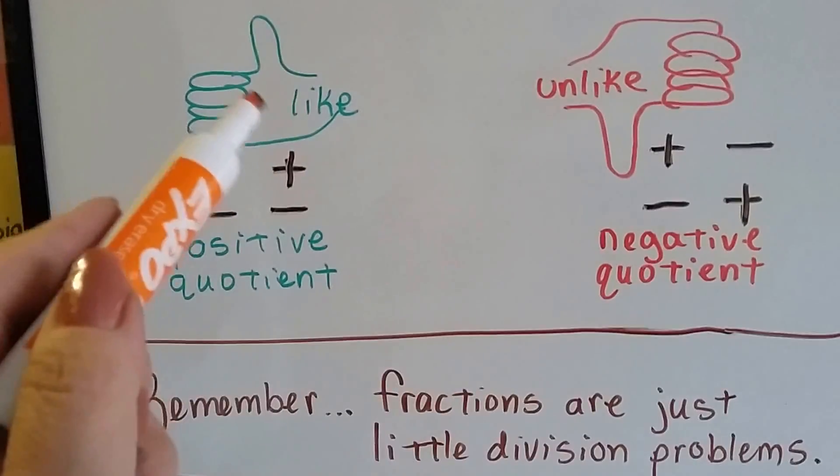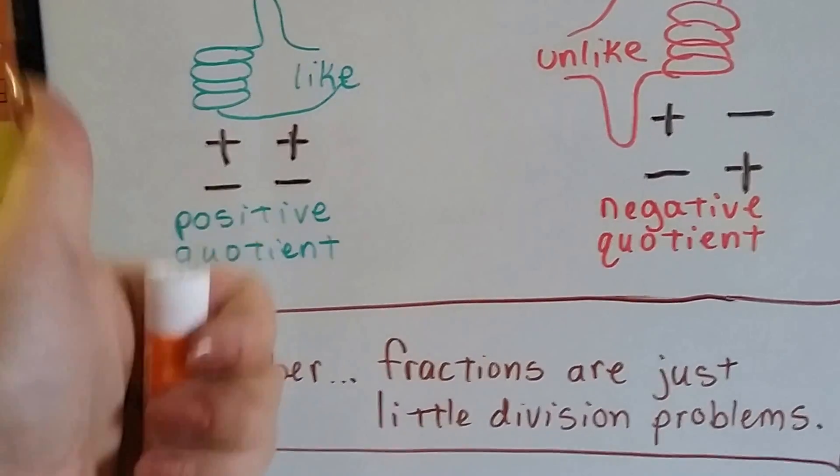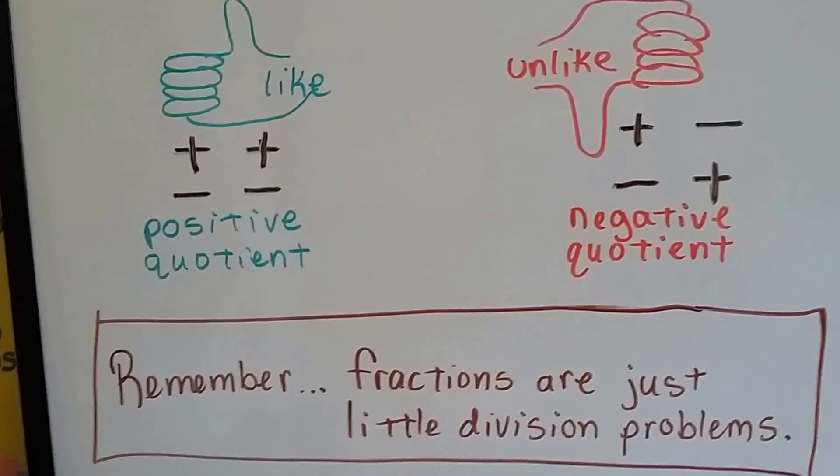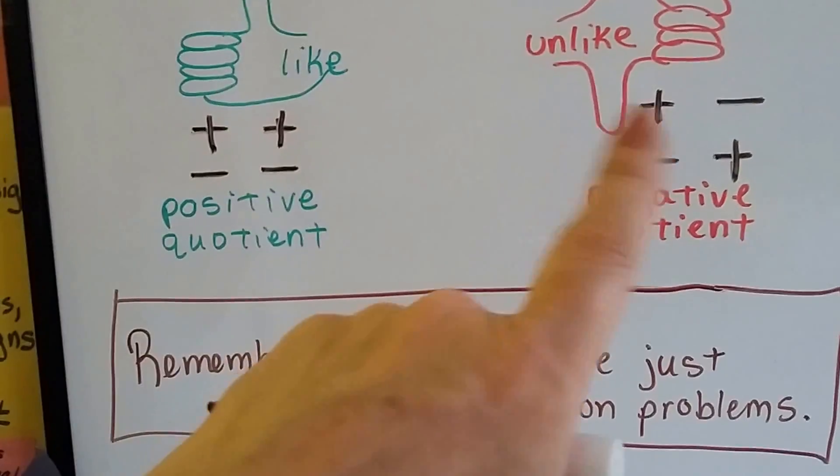Think of this like liking online when you like something. It's thumbs up, it's positive that you like it. And when you unlike something, that's a negative thing. When you unlike something, that's negative.